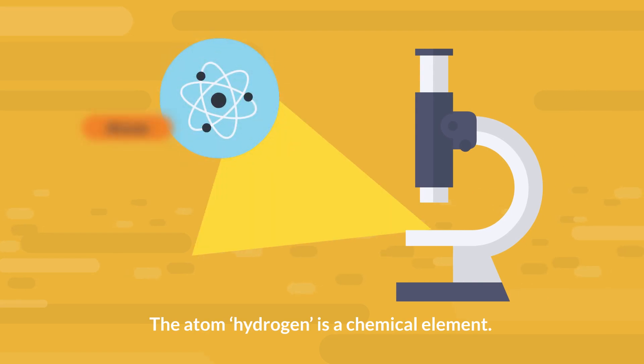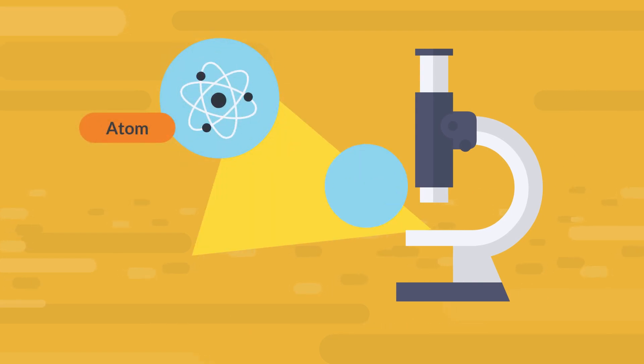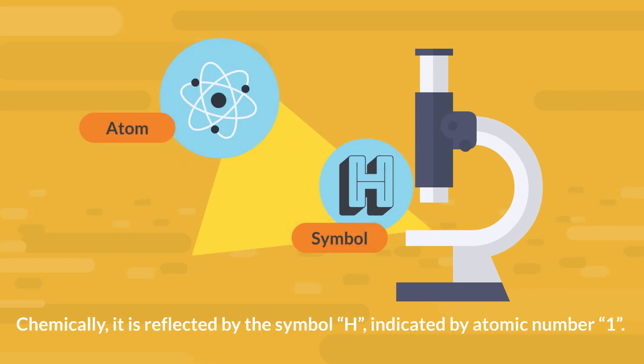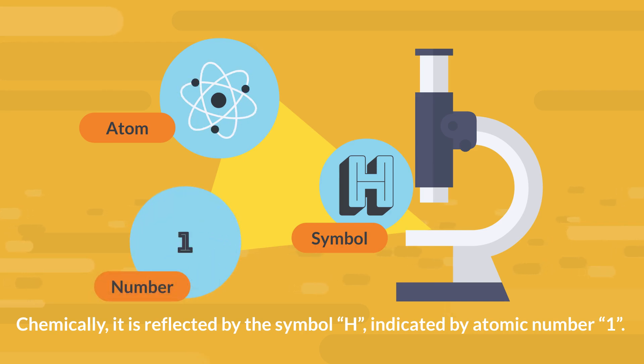The atom hydrogen is a chemical element. Chemically, it is reflected by the symbol H, indicated by atomic number 1.